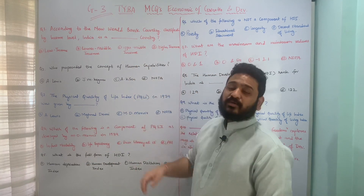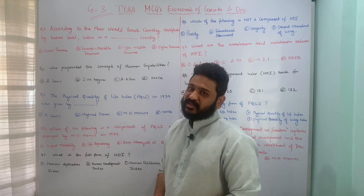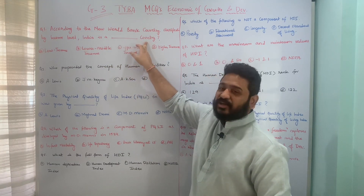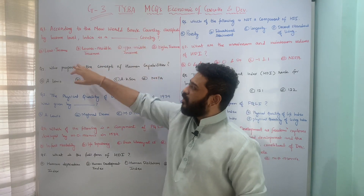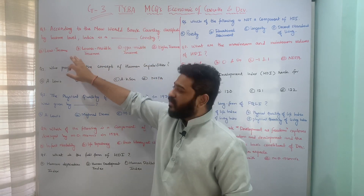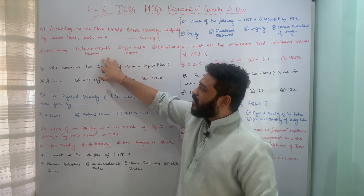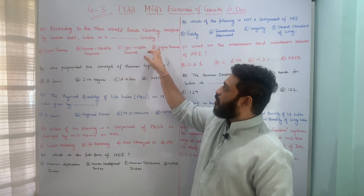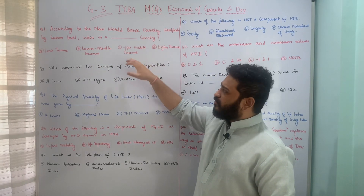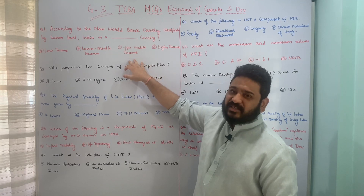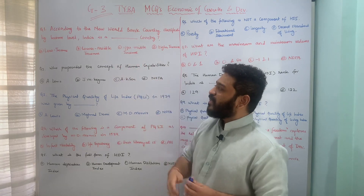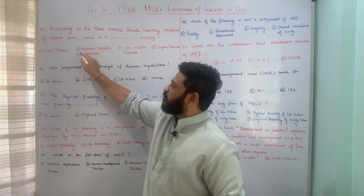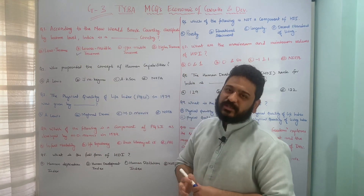The first question is: according to the new World Bank country classification on the basis of income level, India is a dash country — whether India is a low income country, a lower middle income country, an upper middle income country, or a higher income country. India is a lower middle income country, and therefore option B is the correct answer.